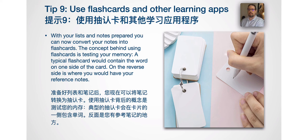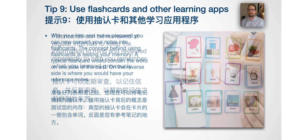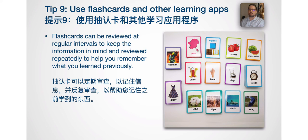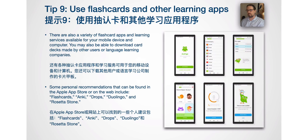Tip number nine is to use flashcards and other learning apps. With your lists and notes prepared, you can convert your notes into flashcards. The concept behind using flashcards is testing your memory — a typical flashcard would contain the word on one side, with reference notes on the reverse. Flashcards can be reviewed at regular intervals to keep information in mind. There are also a variety of flashcard apps and learning services available for mobile and computer, and you may be able to download card decks made by other users. Personal recommendations include Anki, Drops, Duolingo, and Rosetta Stone.